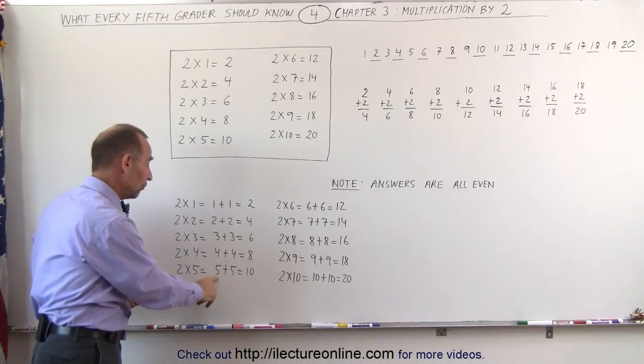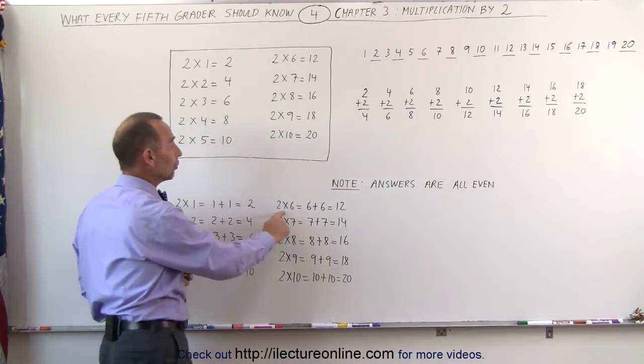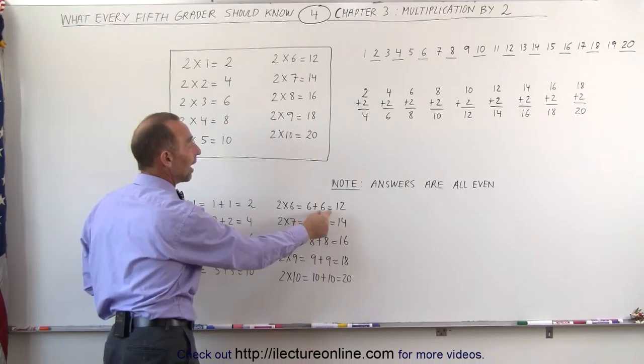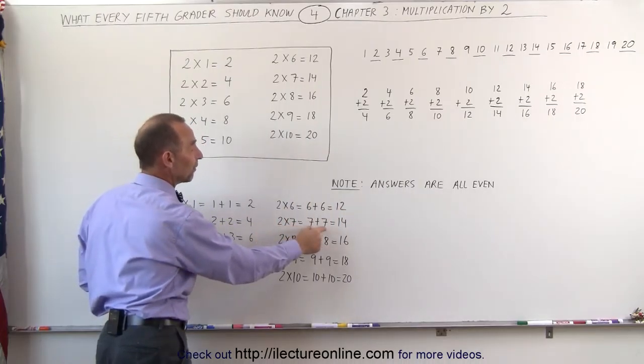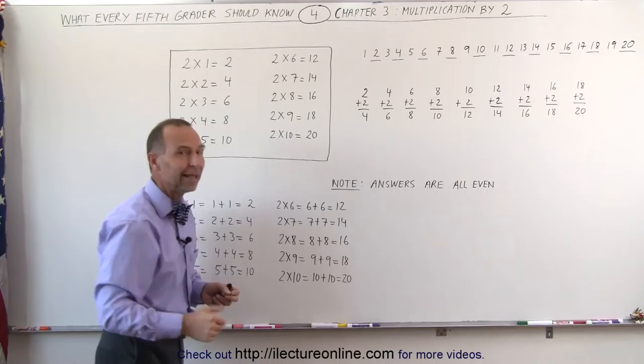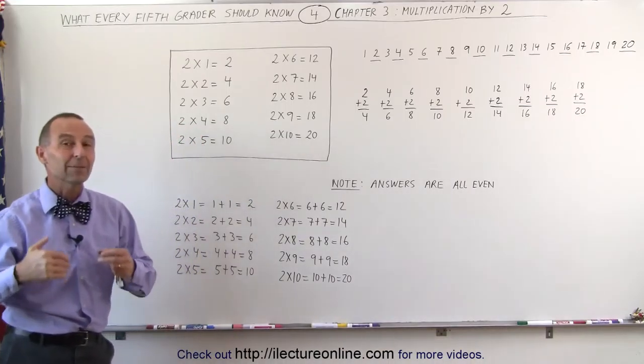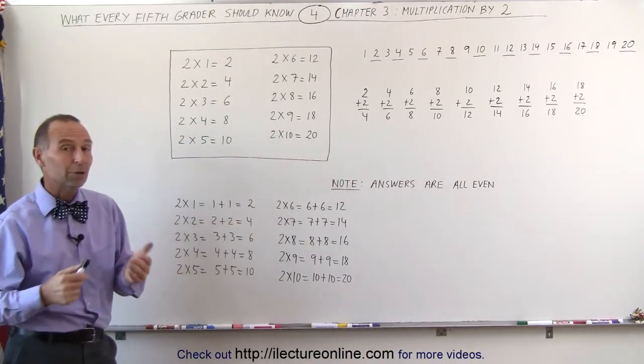2 times 5, that's two 5's, add them together, you get 10. 2 times 6, that means you have two 6's, add them together, you get 12. 2 times 7, you have two 7's, add them together, you get 14. And so you can see the pattern in the methodology of what it means to multiply times 2.